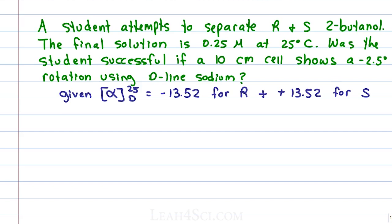In this situation, if we are given a specific rotation and an observed rotation and asked if we're successful, what we're translating this to is simple. Does the alpha observed match the alpha specific or is something wrong here meaning is the solution not pure? If the solution was properly separated, we should be able to calculate one from the other and I purposely made the example this way because some professors will ask you to calculate alpha specific, some will ask you to calculate alpha observed and I want to make sure you can do both.